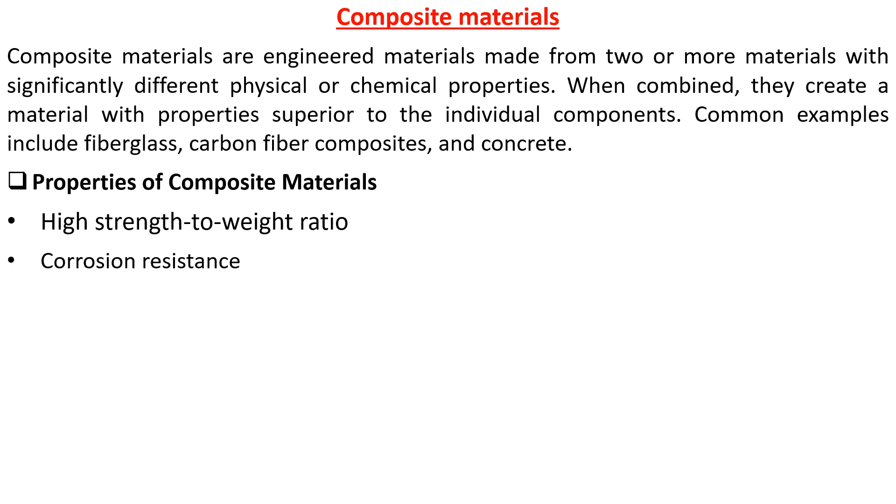Corrosion resistance. One of the advantages of many composite materials is their ability to resist corrosion, especially when compared to metals like steel or aluminum. This resistance to environmental factors like moisture, chemicals, and salt water makes them particularly useful in marine, chemical processing and offshore industries. Composites can maintain their integrity and appearance even in harsh environments.